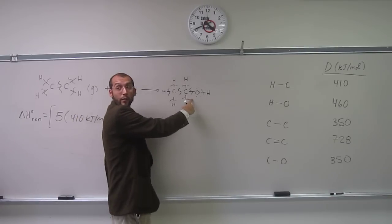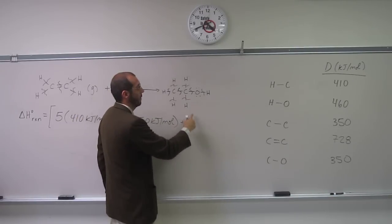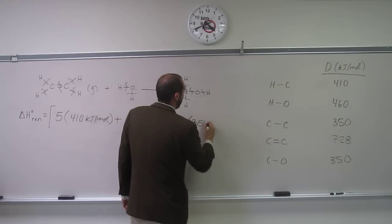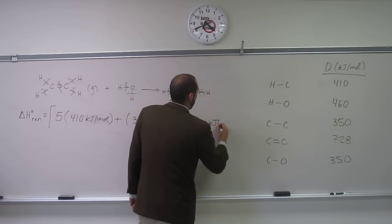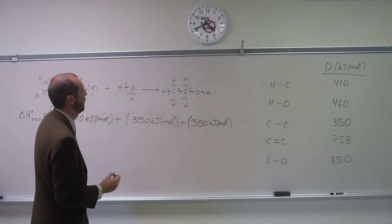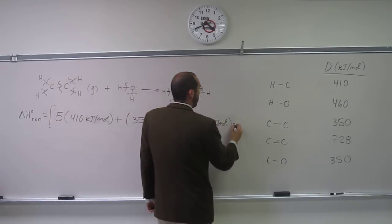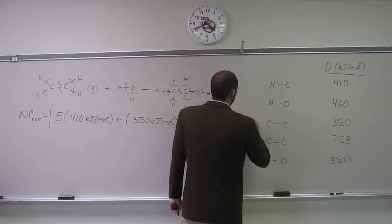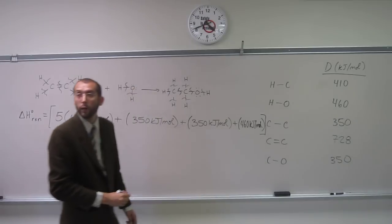And then the CO. We want to do the CO next. So how many of those do we have? One. Just the one. So that's 350 as well. Do we have any other bonds in there? One OH. Yeah, the one OH. So that's going to be 460. And no more, right?